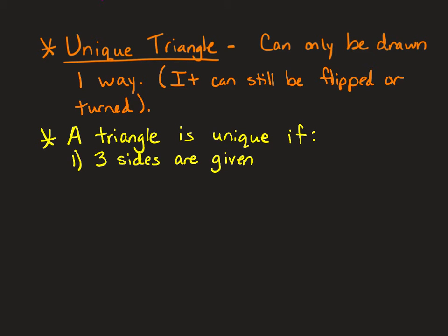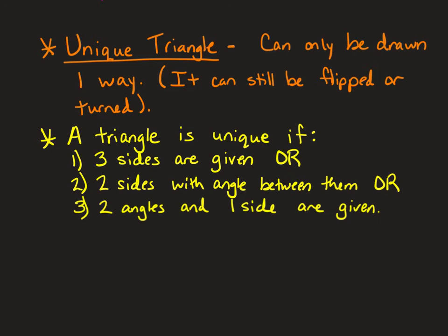Now a triangle is unique if it fits one of these categories. It's unique if only three sides are given, or two sides are given with an angle between them, or two angles and one side are given.